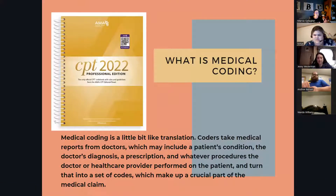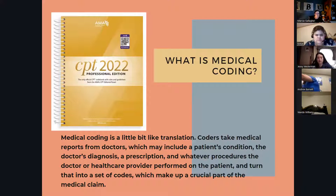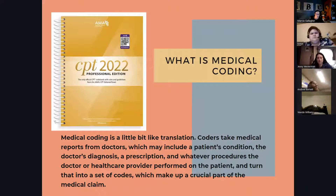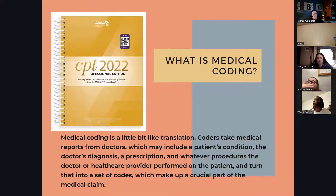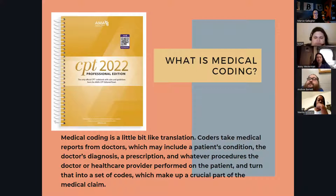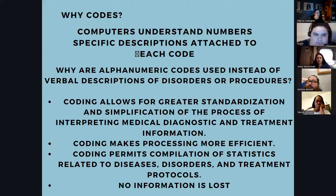We're going to start by answering: what is medical coding? Medical coding is a little bit like translation. Coders take medical reports from doctors — which may include a patient's condition, the doctor's diagnosis, a prescription, and whatever procedures the provider performed — and turn that into a set of codes, which make up a crucial part of the medical claim. Diagnosis coding is what the patient is ill with; CPT coding is what we did to help that illness. So the CPT is what we did, and the ICD-10 is why we did it.